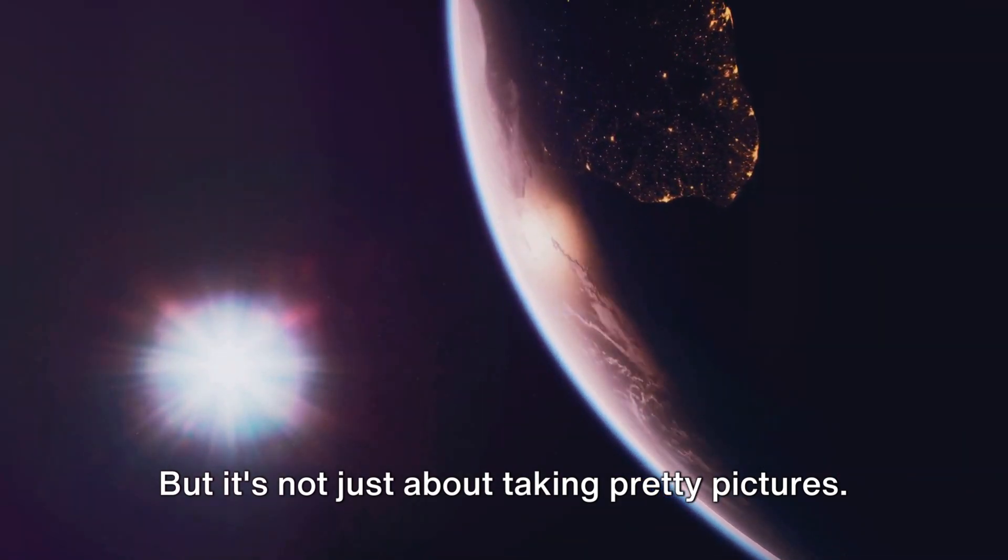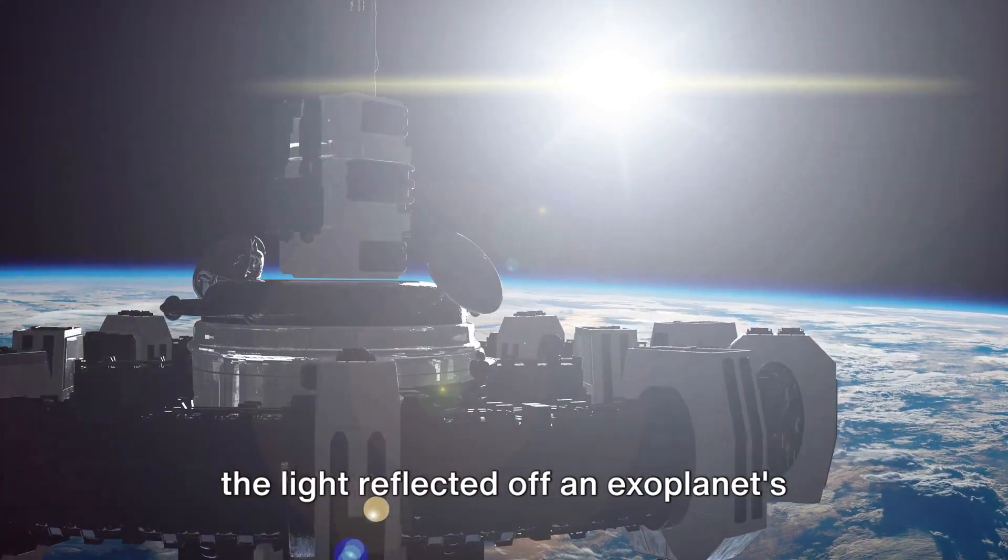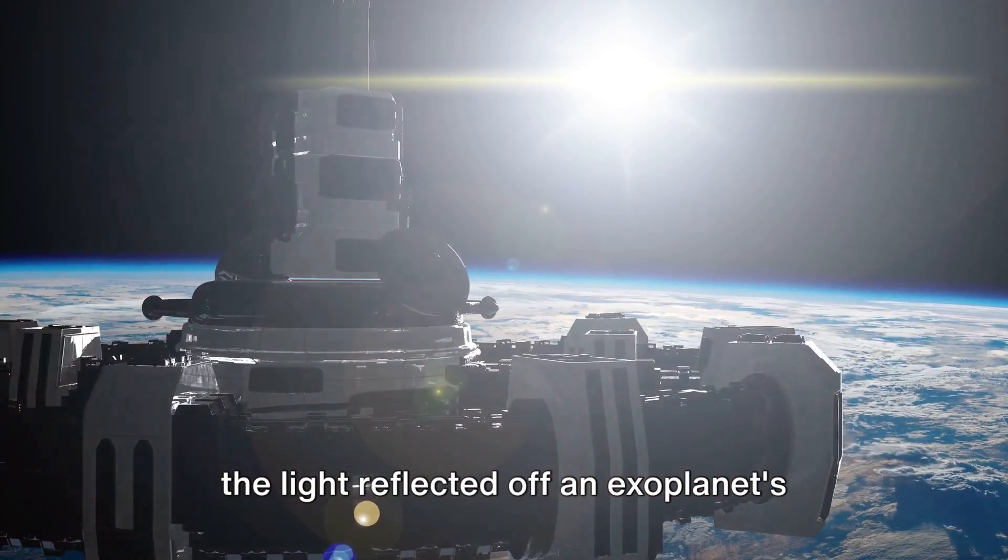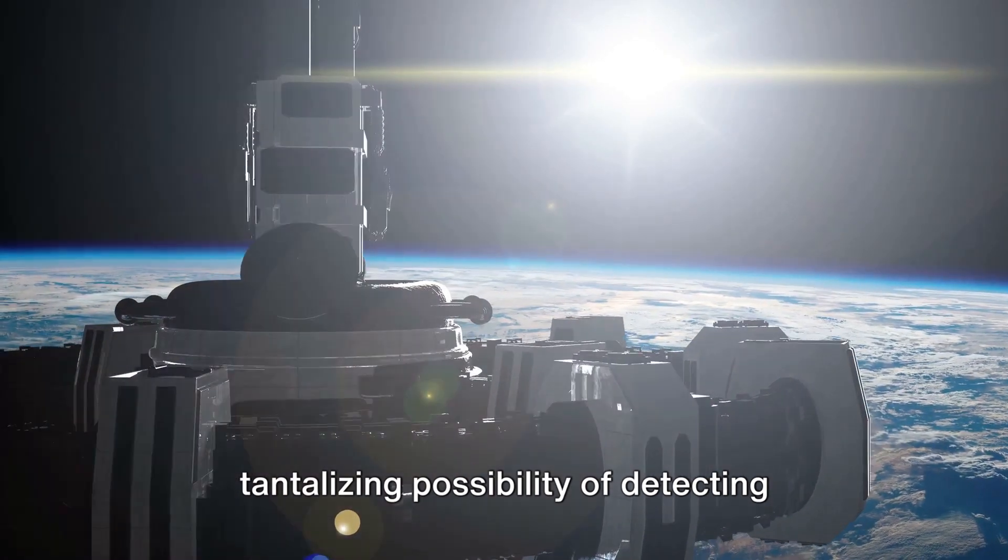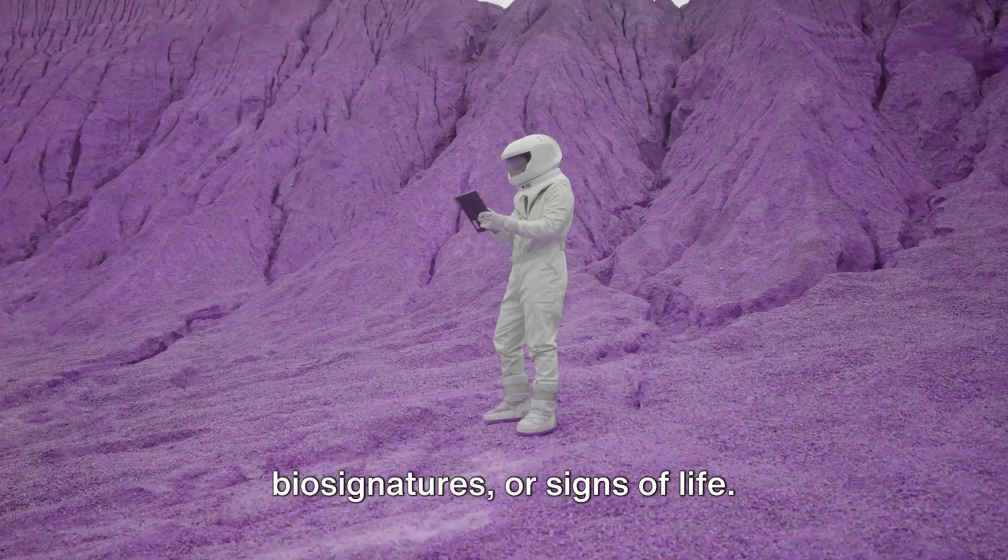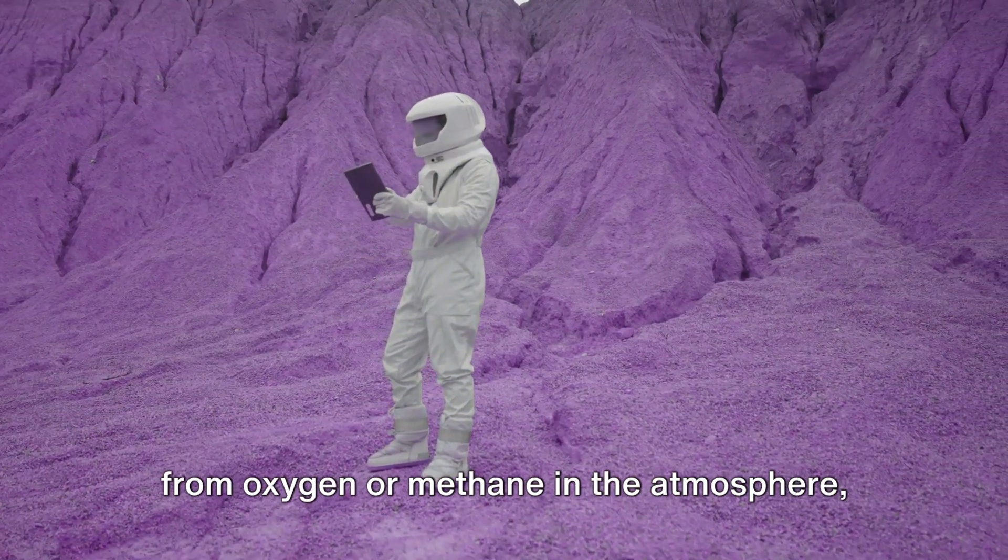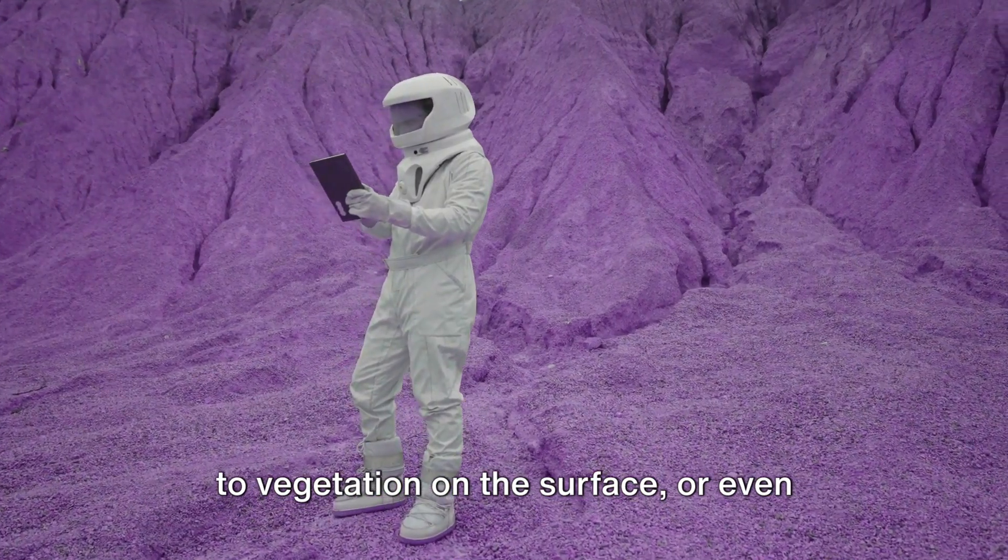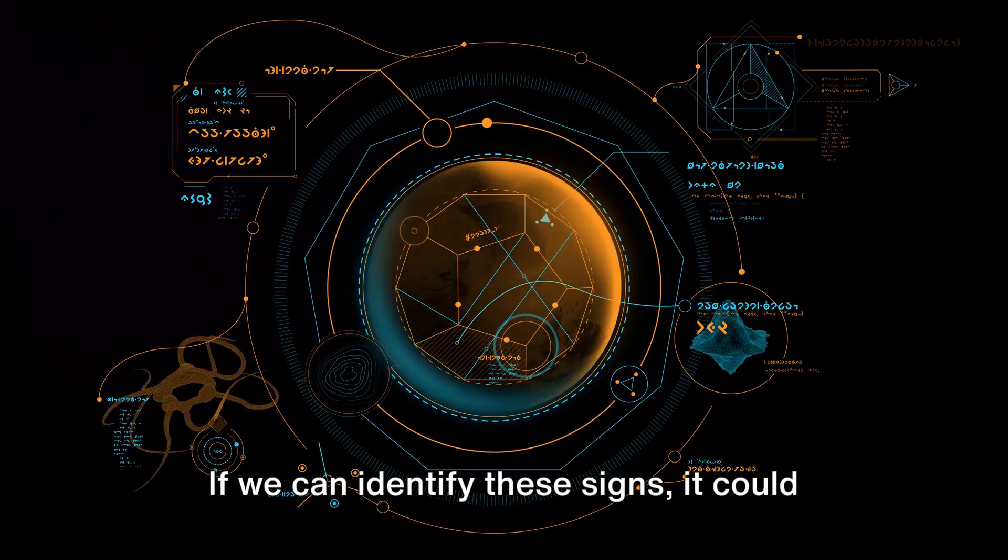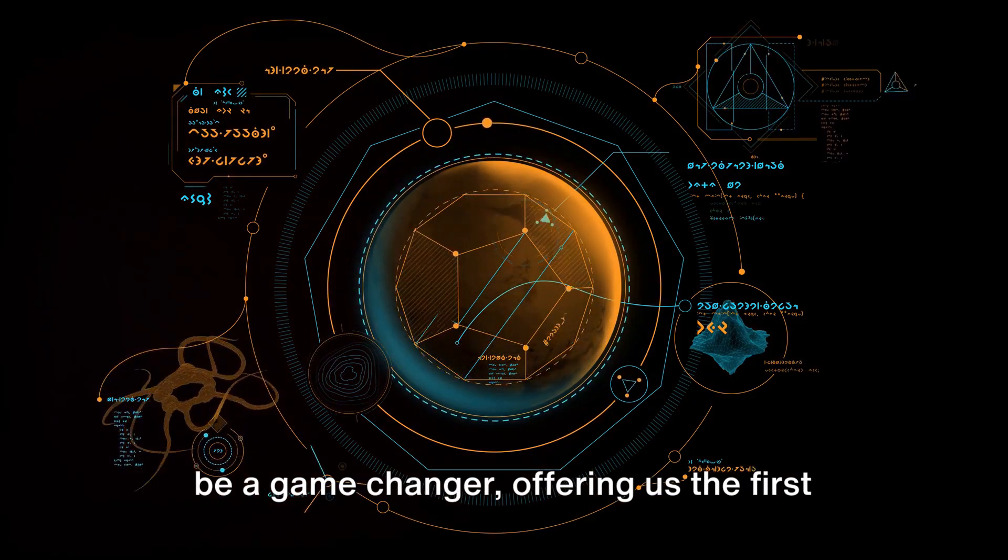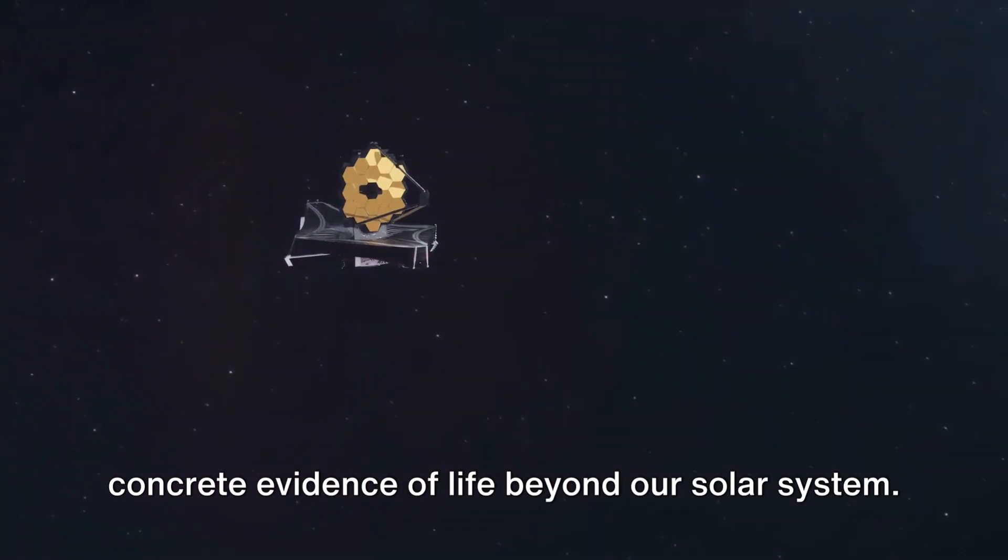But it's not just about taking pretty pictures. Direct imaging will enable us to analyze the light reflected off an exoplanet surface or atmosphere, opening up the tantalizing possibility of detecting biosignatures or signs of life. These biosignatures could be anything from oxygen or methane in the atmosphere, to vegetation on the surface, or even artificial lights. If we can identify these signs, it could be a game-changer, offering us the first concrete evidence of life beyond our solar system.